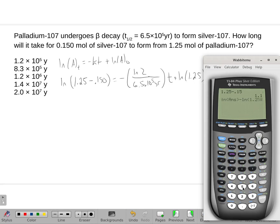Now I'm going to multiply by the 6.5 × 10^5 and divide by the natural log of 2, and that should be my answer. Of course it's negative, so we're just going to ignore that. So I'm looking for 1.2 × 10^5.